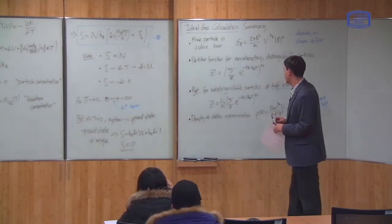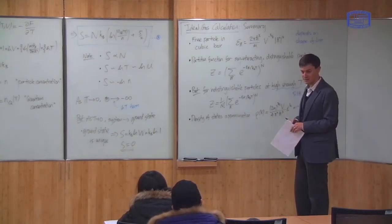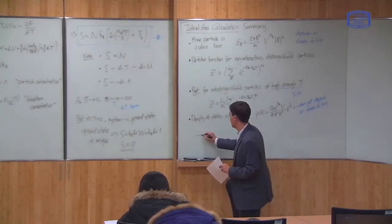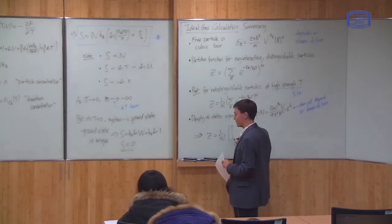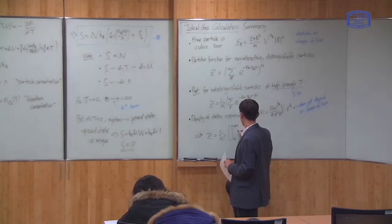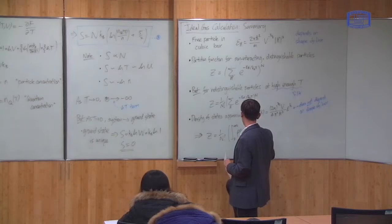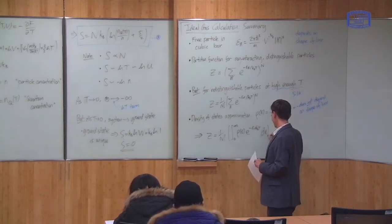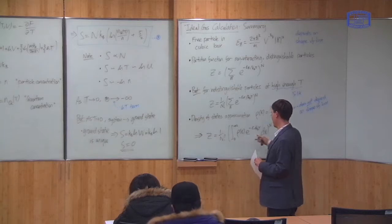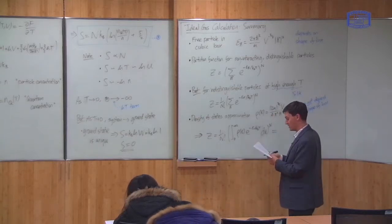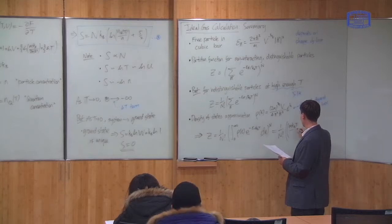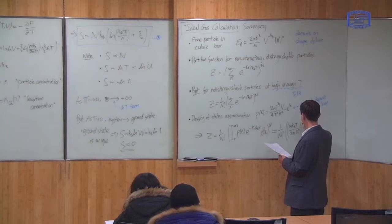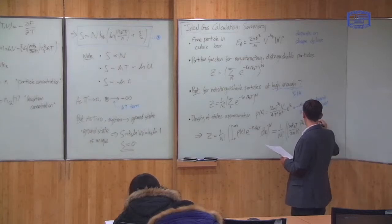And using this approximation, what you do is you replace the sum by an integral multiplying by the density of states. And this is what we did today. We said that this tells you that z is 1 over n factorial times the integral 0 to infinity of the density of states times e to the minus ε to the power n. And this is what we did today. Today, we evaluated this integral and we got the final result, that this is 1 over n factorial times (mkT/2πℏ²)^(3/2) times V to the power n.